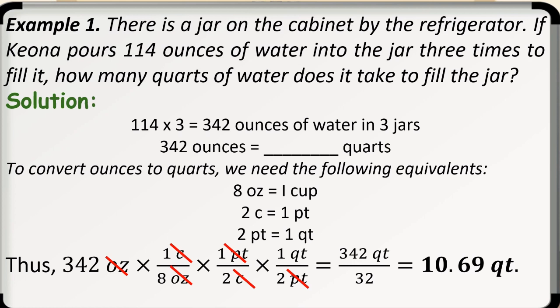We then multiply numbers in the numerator. 342 times 1 times 1 is equal to 342 quarts. Then, we multiply numbers in the denominator. 8 times 2 times 2 is equal to 32. Now, divide 342 quarts by 32. The answer is 10.69 quarts. Therefore, it takes 10.69 quarts of water to fill the three jars.